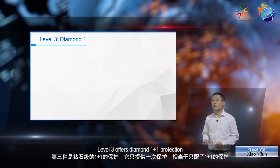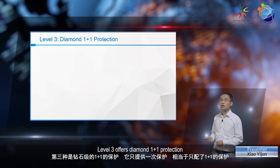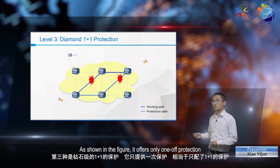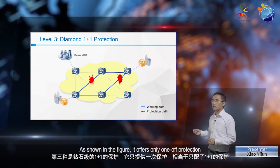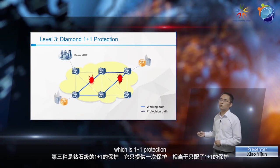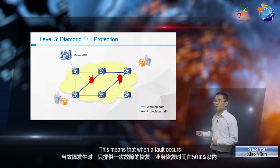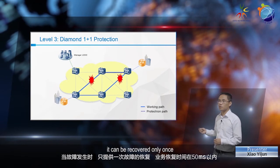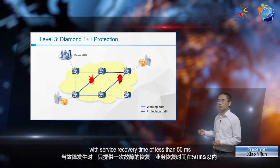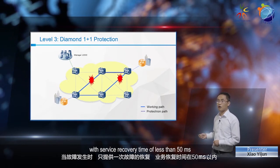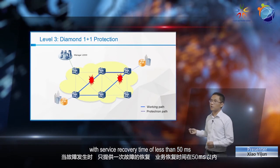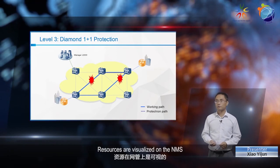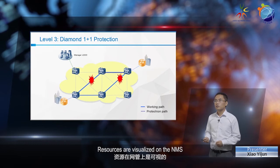Level 3 offers diamond 1+1 protection. As shown in the figure, it offers only one-off protection, which is 1+1 protection. This means that when a fault occurs, it can be recovered only once, with a service recovery time of less than 50 milliseconds. Resources are visualized on the NMS.